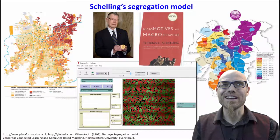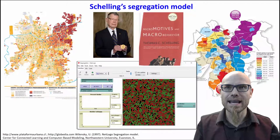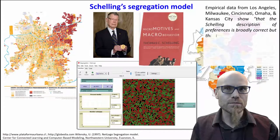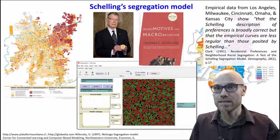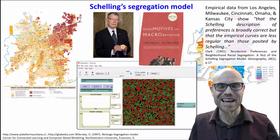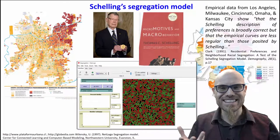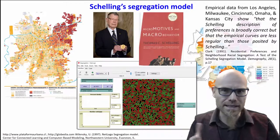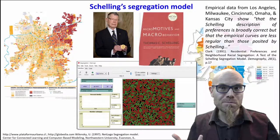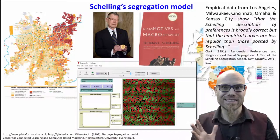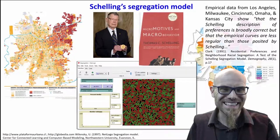Coming back to a previous point: Schelling's theory has been tested with empirical data from Los Angeles, Milwaukee, Cincinnati, Omaha, and Kansas City, and the Schelling description of preferences is broadly correct — but the empirical curves are less regular than those posited by Schelling. Schelling did this theoretically without even computers, so he presented very idealized curves. Reality is a little more messy because there are more complex things happening — some details we leave out, which makes the curves more wiggly. That's normal. We're trying to abstract and understand, just as with the London Underground map: if you have every wiggle, you don't get the idea. With an idealized model, you get the idea. Reality is a little more wiggly.